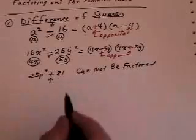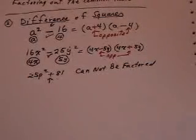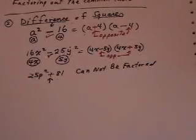As soon as you see a plus, it cannot be factored. It must be a difference, a subtraction sign in between the perfect squares.